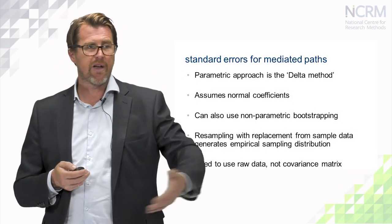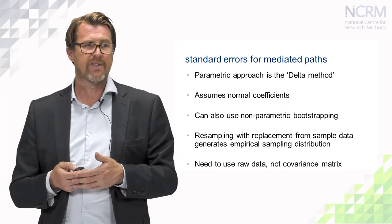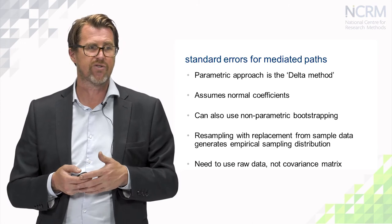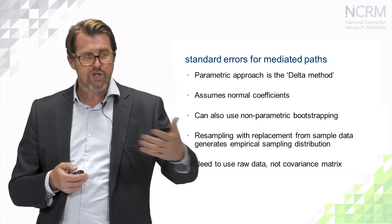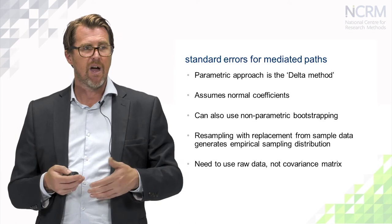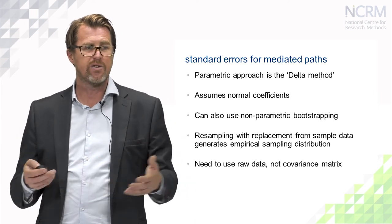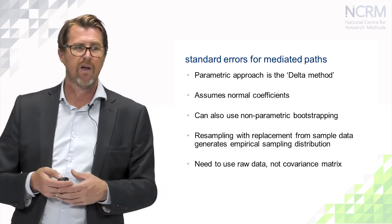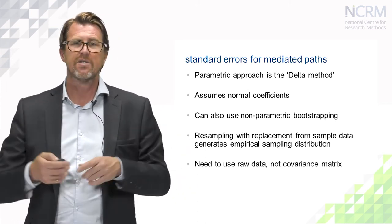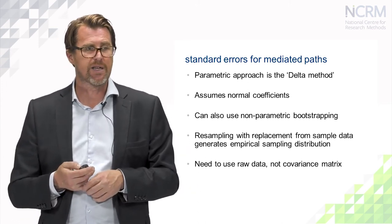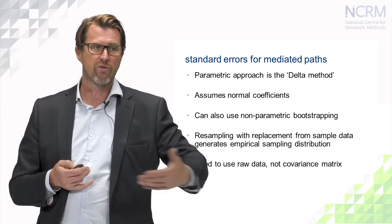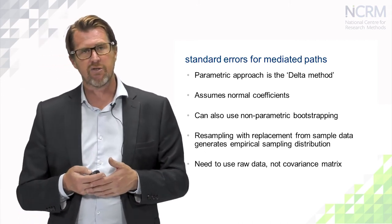So we can either calculate the standard errors for these mediated paths using what's called the Delta method, a parametric approach which assumes multivariate normality, or more commonly now using non-parametric approaches like bootstrapping, resampling from the sample data to generate an empirical sampling distribution. And if we do that, of course, we need to have the raw data rather than the covariance matrix.